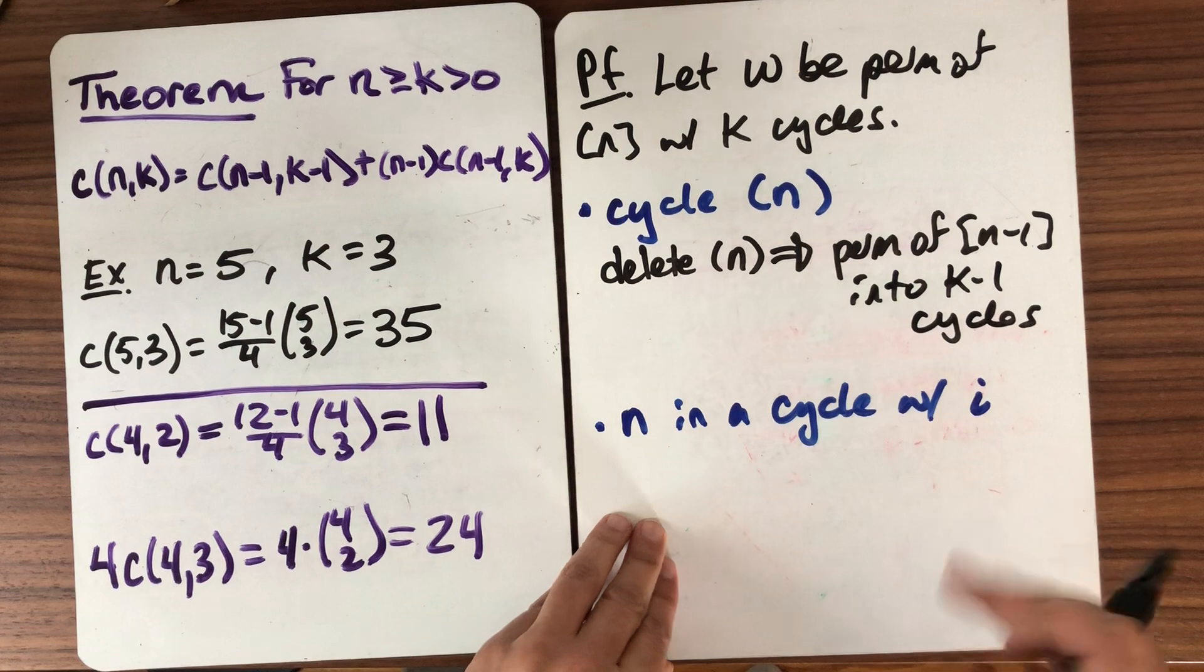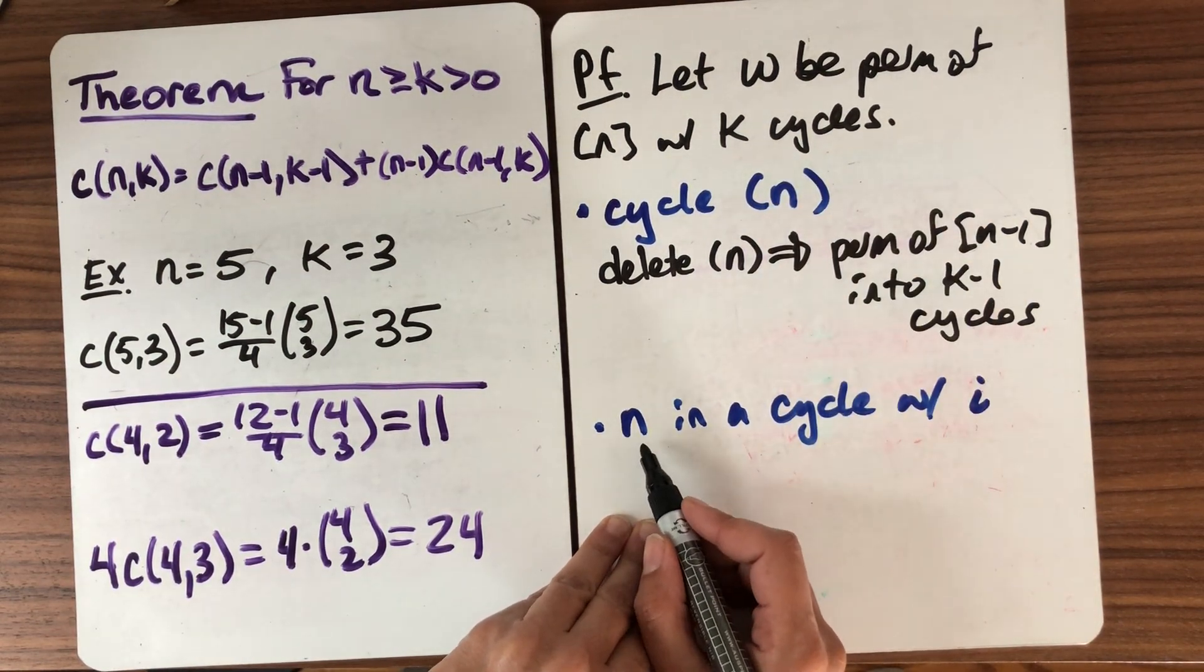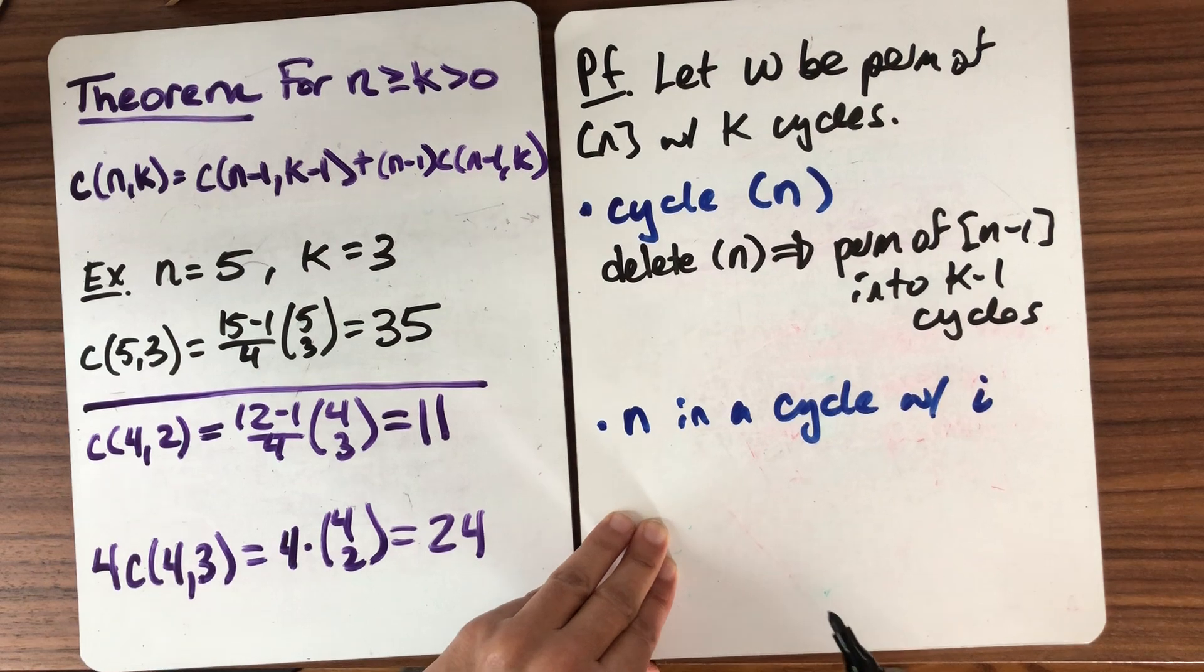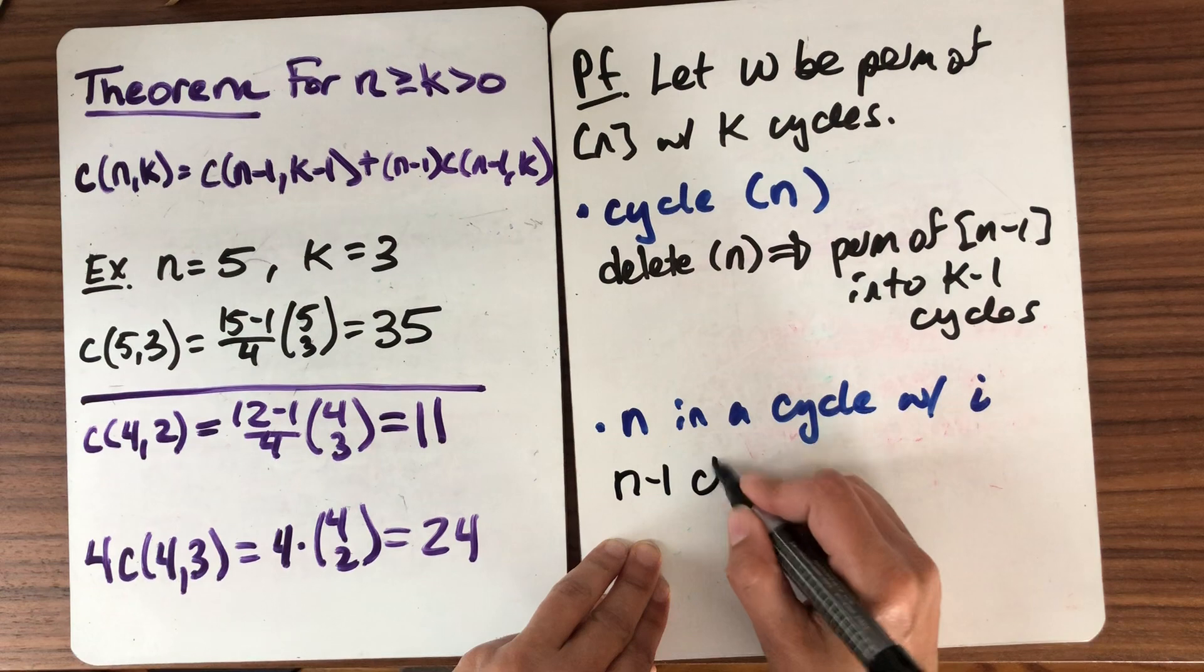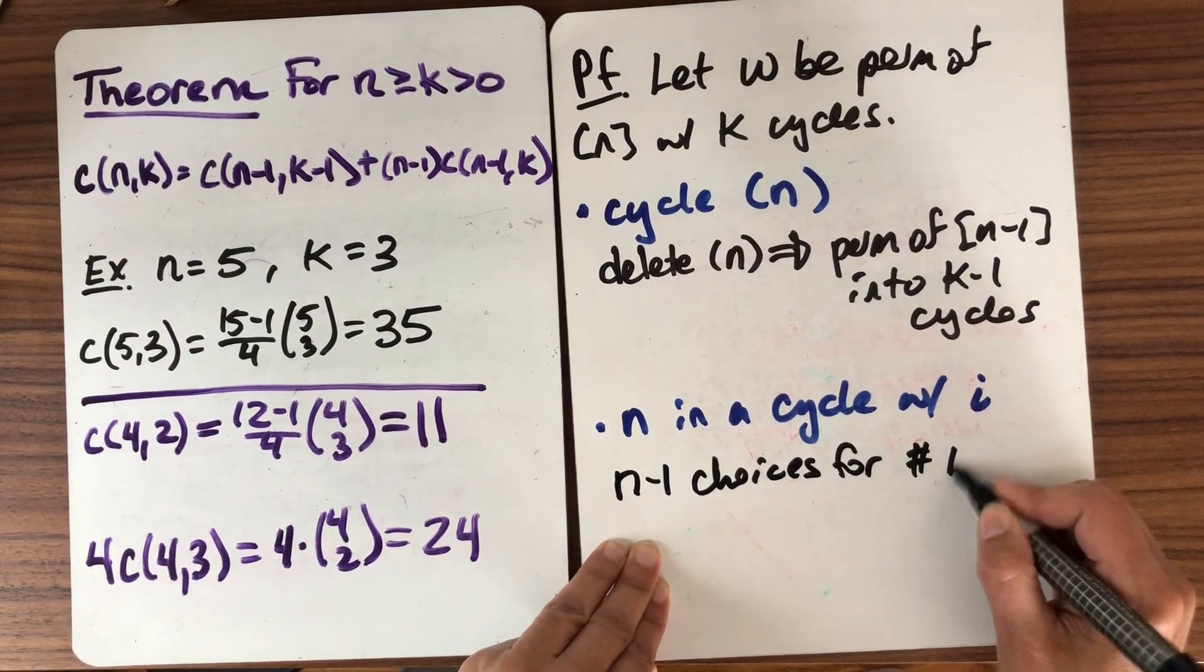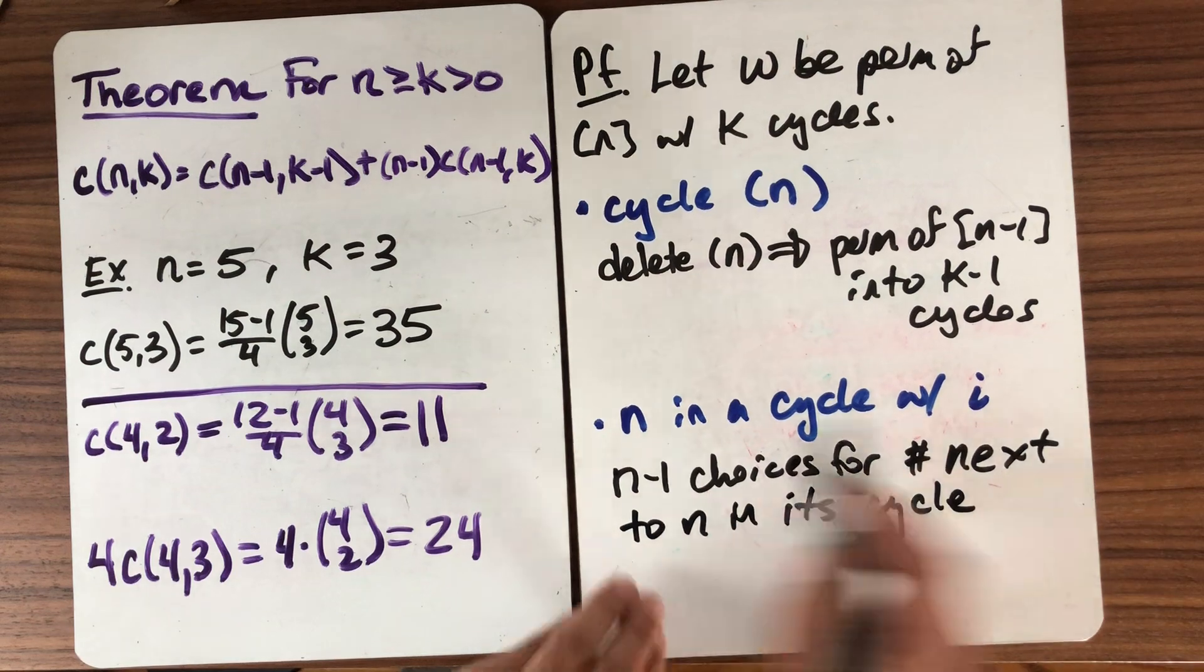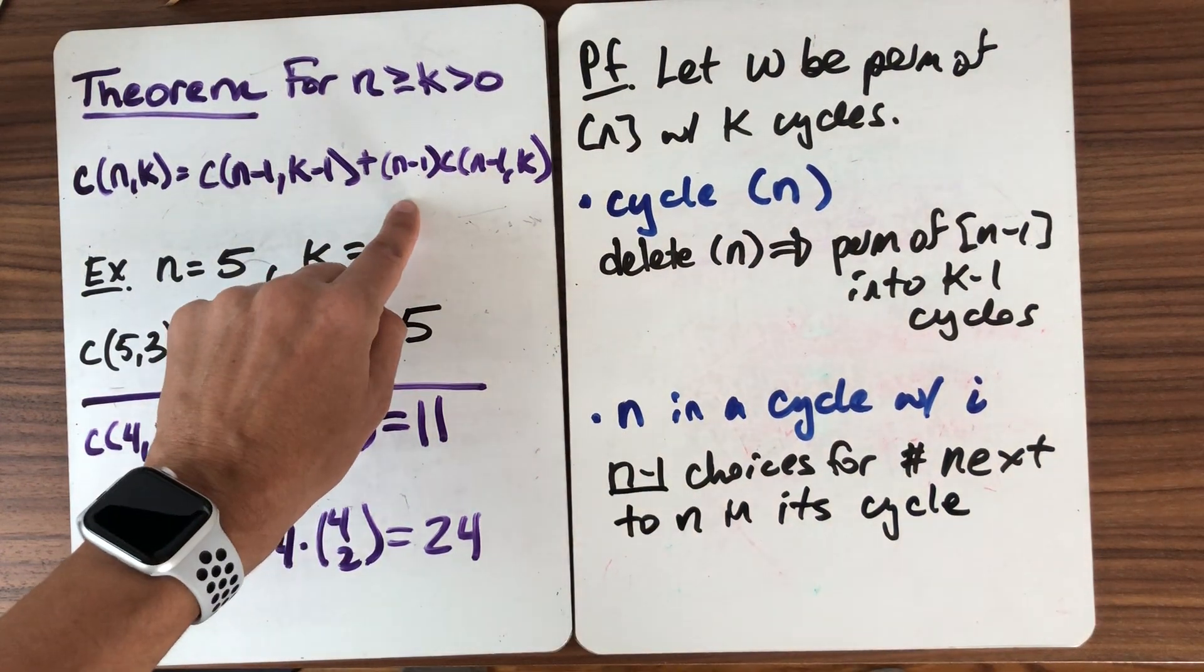What about in this case? Again, let's think about how many choices there are. So we're going to think about here, n goes to itself. Here, n goes to i. So when we take n out, we're going to kind of shorten up that cycle. We're going to make it one shorter. So there are n-1 choices for the number next to n in its cycle. There's something after n, and there are n-1 choices for it. That's what this is.